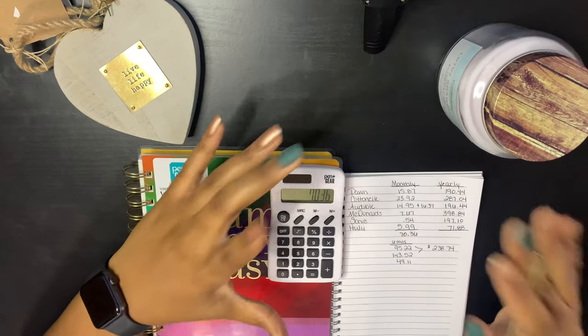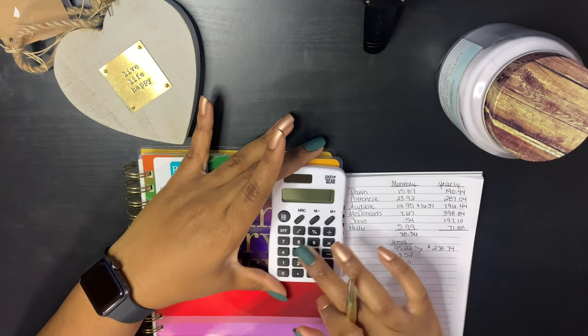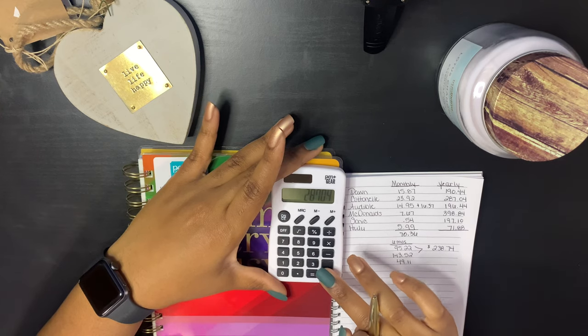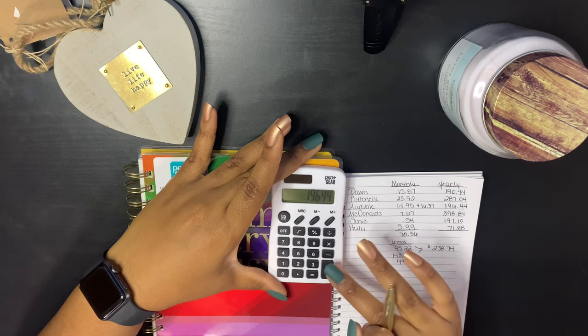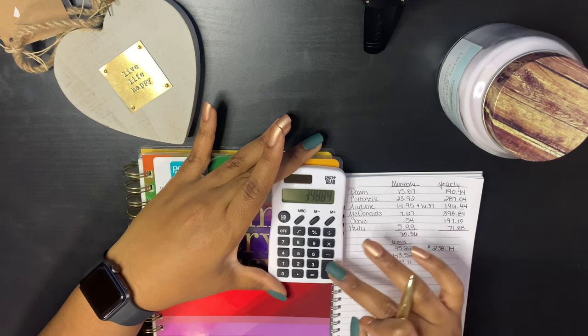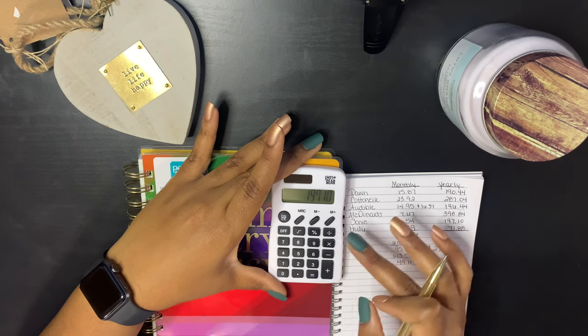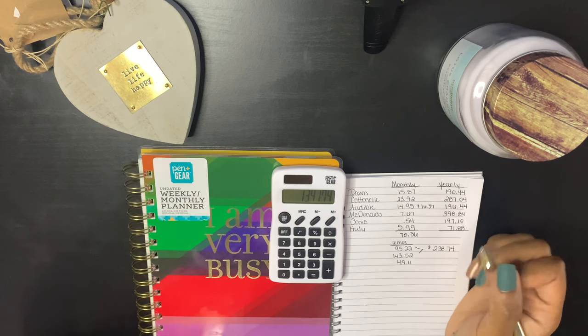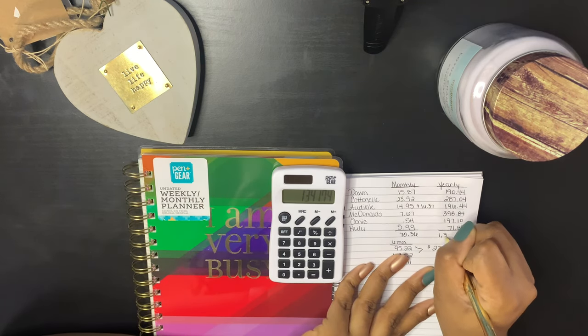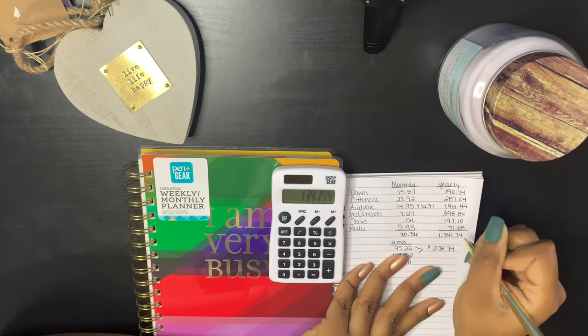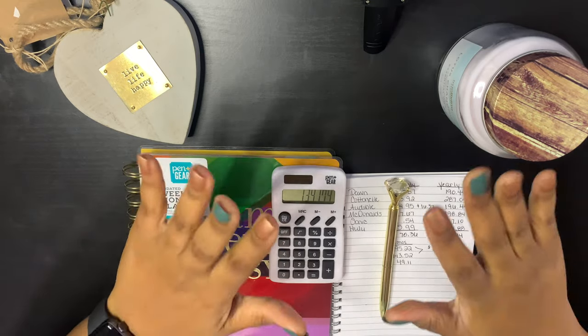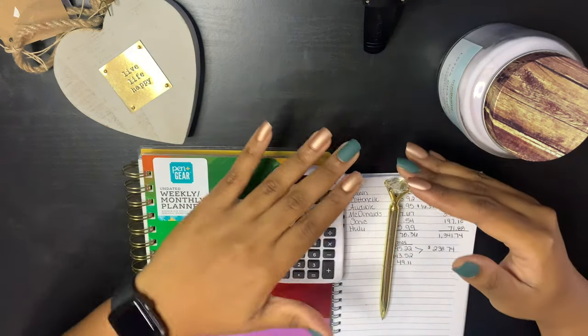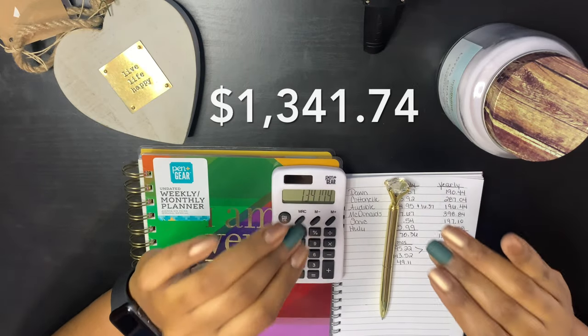Okay, so let's add up the yearly amount. So we have $190.44 plus $287.04 plus $196.44 plus $398.84 plus $197.10 plus $71.88, and that comes out to $1,341.74. Yo. Did y'all hear what I said? $1,341.74.